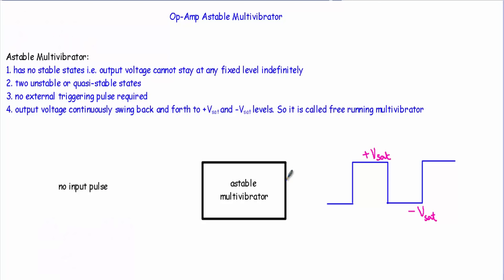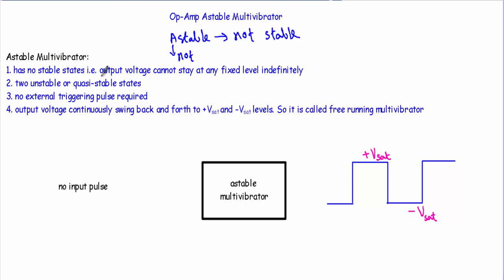In this video I will show you the detailed operation of an operational amplifier astable multivibrator circuit. The word 'astable' means 'not stable' - the output of this multivibrator will not be stable at any fixed state. An astable multivibrator has no stable states, meaning the output voltage cannot stay at any fixed level indefinitely.